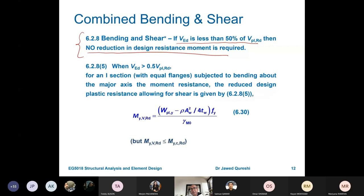But just in case if V_ED over V_C,RD or V_PL,RD if it is greater than 0.5 or 50 percent, then we consider the effect of shear on bending moment. It means that it will reduce bending moment.